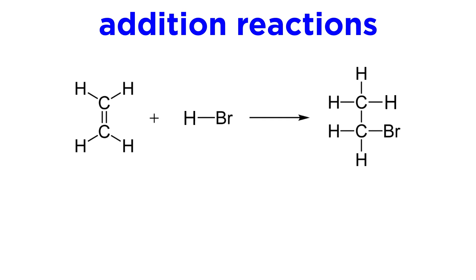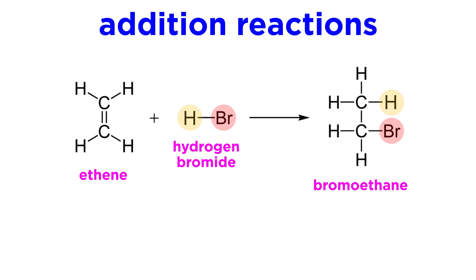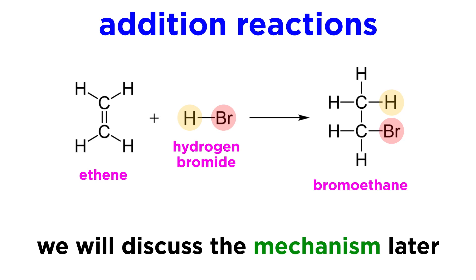First up, addition reactions. The starting material for an addition reaction is something with a pi bond, like an alkene or an alkyne. Here we see an alkene. If an alkene undergoes an addition reaction, two groups will be added to the molecule, one to each of the carbons participating in the pi bond, and as a result the pi bond will go away. Here we have the addition of hydrogen bromide to ethene, which gives bromoethane. The hydrogen went to one carbon, the bromide went to the other, and the pi bond is gone. We will talk about the mechanism for this reaction a bit later. For now, just try to recognize what we started with, what we got, and the transformation that took place.